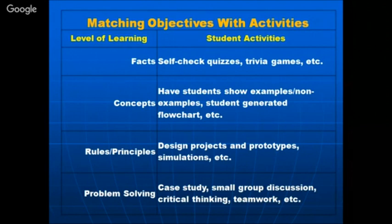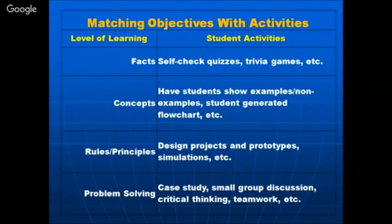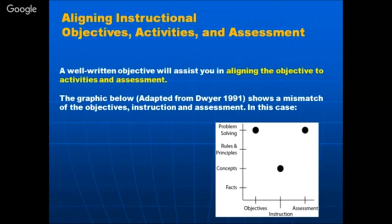I am now winding up this session by discussing matching objectives with activities. These are the levels of learning — facts, concepts, rules, principles. Any theory topic involves going from facts to concepts to rules or principles to problem solving, as you go higher. Student activities can be self-checks or quizzes for facts, showing examples or non-examples for concepts, flowcharts for teaching principles, and design projects, prototypes, simulations, case studies, or small group discussions for problem solving.